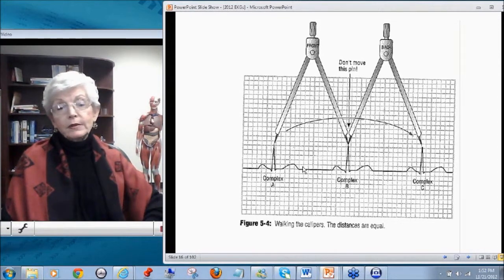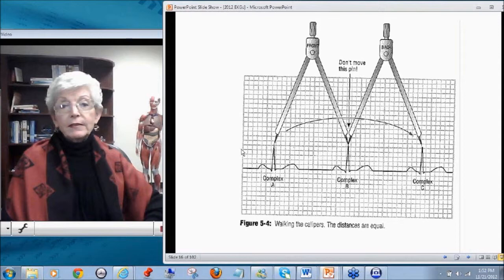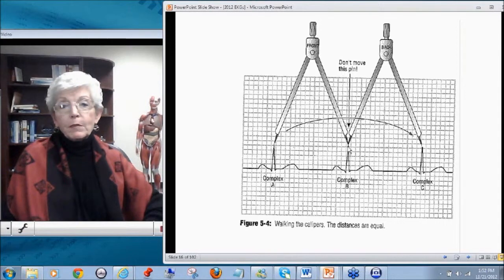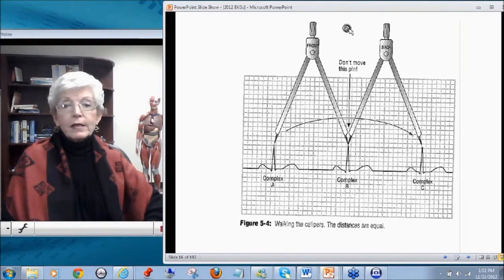What if you don't have a set of calipers? Well, you could just take a piece of paper, lay it across here, and make a little hash mark with your pen at the top of the little beads here, make a little mark here, a little mark here, and take that paper and just move it along, just like a ruler, to see whether it was regular or irregular.